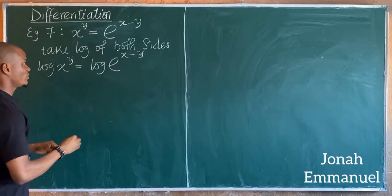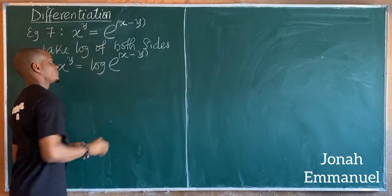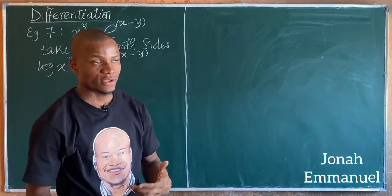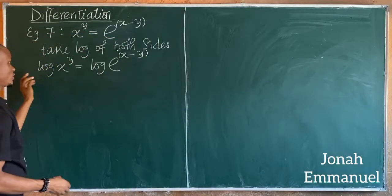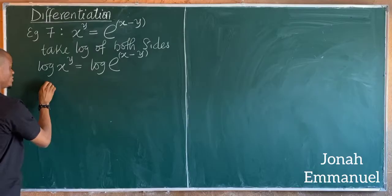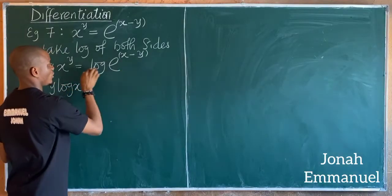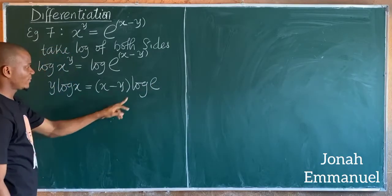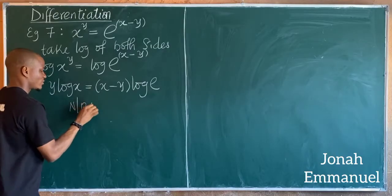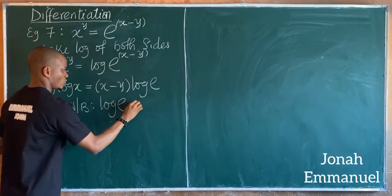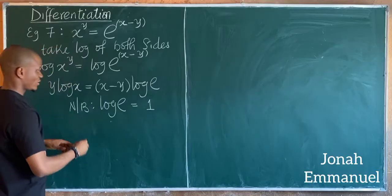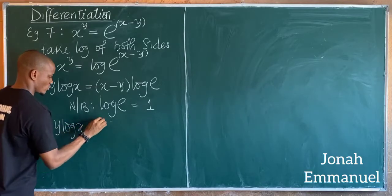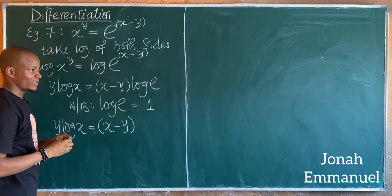The entire exponent (x minus y) is the power of the exponential. Using the log power rule, the index comes down: y log x equals (x minus y) times log e. Since log e equals one, this simplifies to y log x equals x minus y.